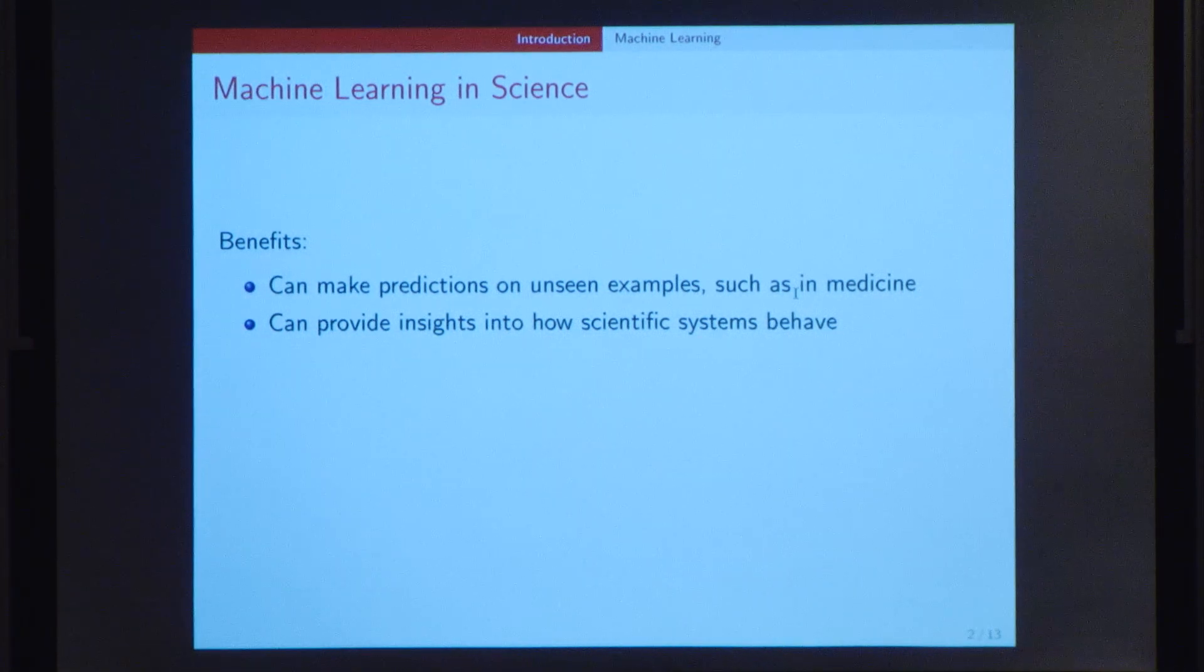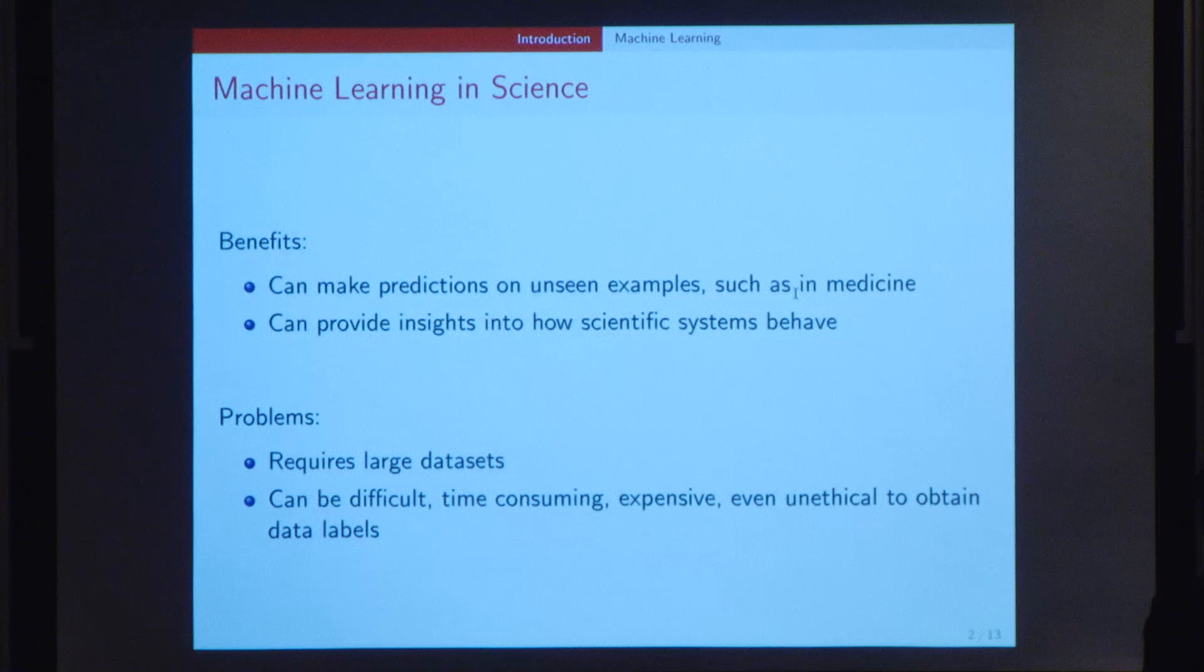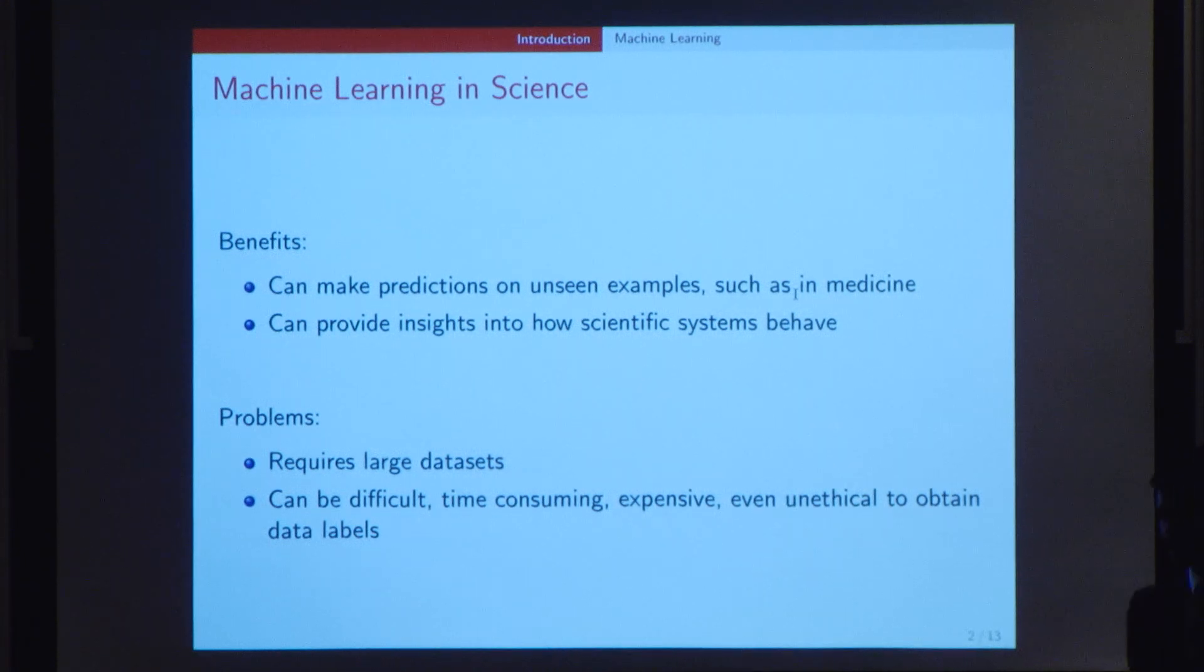But these benefits don't come without their limitations. The first one being that to make accurate predictions, machine learning requires really large datasets. And these large datasets, especially in science, can be very difficult, time-consuming, expensive, and in some cases even unethical to obtain the data labels for.